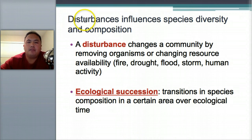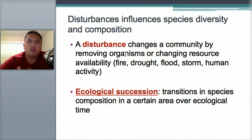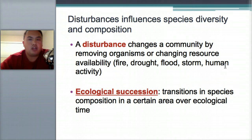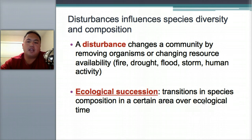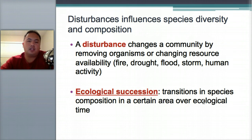What can affect diversity? A disturbance changes the community by removing organisms. A disturbance is some sort of removal of species or change in resources — fire, drought, flood, storm, or human activity like chopping trees. When there's a disturbance, it starts something called ecological succession — a transition in species composition in a certain area over time. A succession means the whole community transitions into a new community.